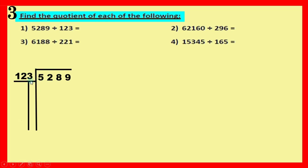Question number one: five thousand two hundred and eighty-nine divided by one hundred and twenty-three. We set up the steps. Is our three-digit number five hundred and twenty-eight bigger than one hundred and twenty-three? Yes, it's bigger. Now we cover units and tens with units and tens. Left with five and one.